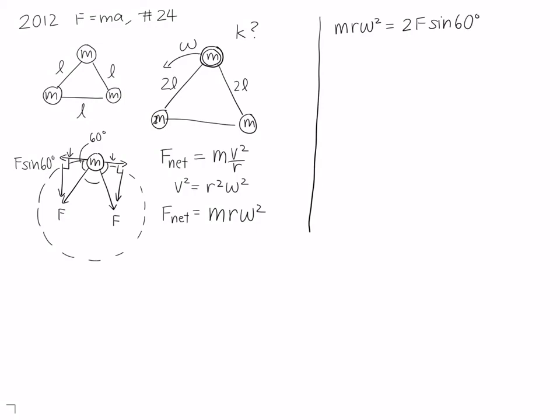Now what we find is that F is just equal to k times some displacement. What is our displacement? Well, initially when it's at rest it is at length L, and then when it starts rotating it is at 2L. So we find that our x, our displacement, is just going to be 2L minus L, or L. So F is equal to k times L.